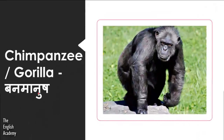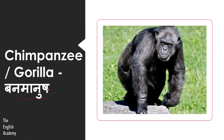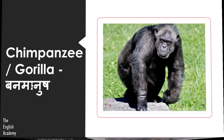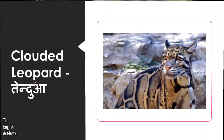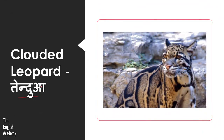Then we have Banmanosh, which is called Chimpanzee or Gorilla. The next animal is Tendua, which is called Clouded Leopard — this is a variety of Leopard.